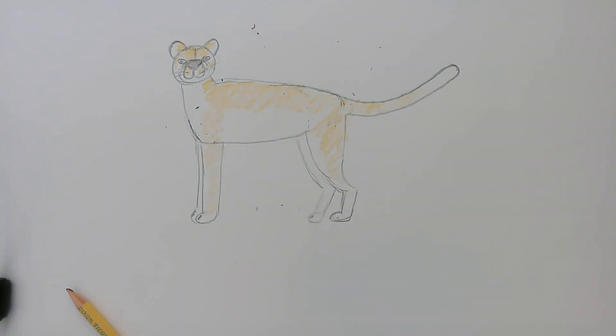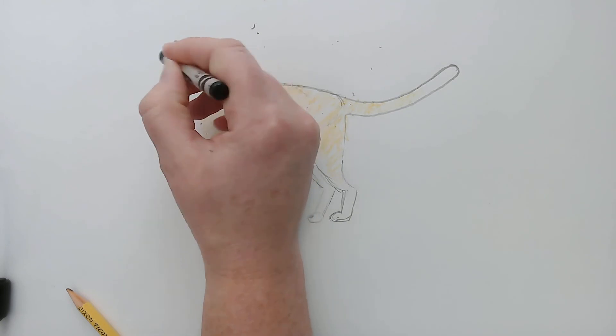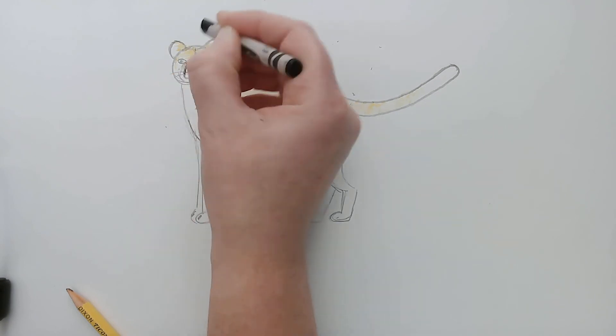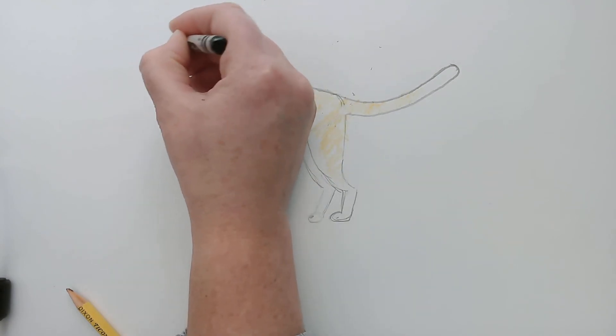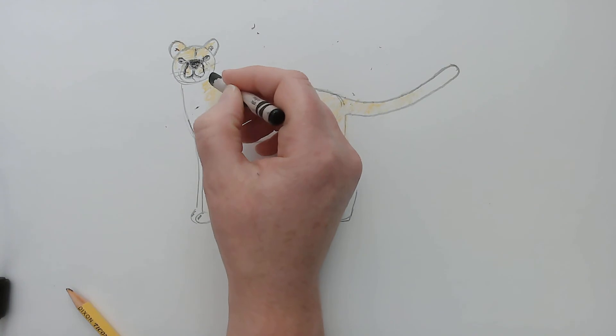And then I'll find my black crayon for the spots. I'm also going to add where I see those lines that go down in the front of the face, the nose. I'm going to add the nose, the ears. And then I'm going to start adding where I see all of these spots.